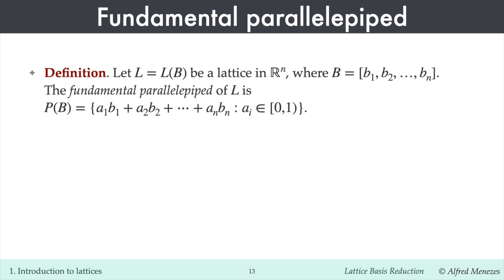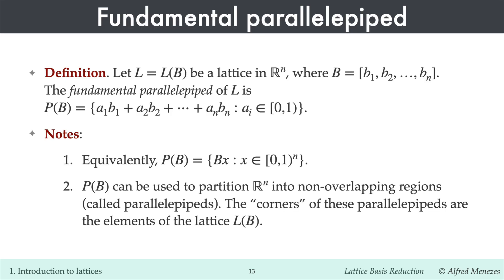More generally, let L be an n-dimensional lattice with basis B. The fundamental parallelepiped associated with B is the set of all linear combinations of the basis vectors where the scalars A1, A2 up to An are real numbers between 0 and 1, not including 1. The fundamental parallelepiped can be used to partition R^n into non-overlapping regions called parallelepipeds. The corners of these parallelepipeds are the elements of the lattice L(B); by placing a copy of the fundamental parallelepiped at each lattice point, we get a tiling of the entire space.